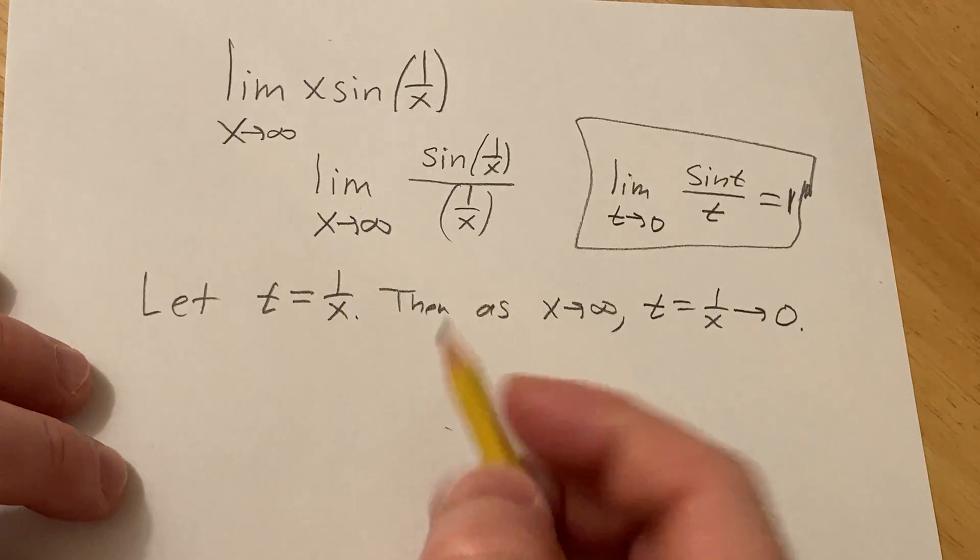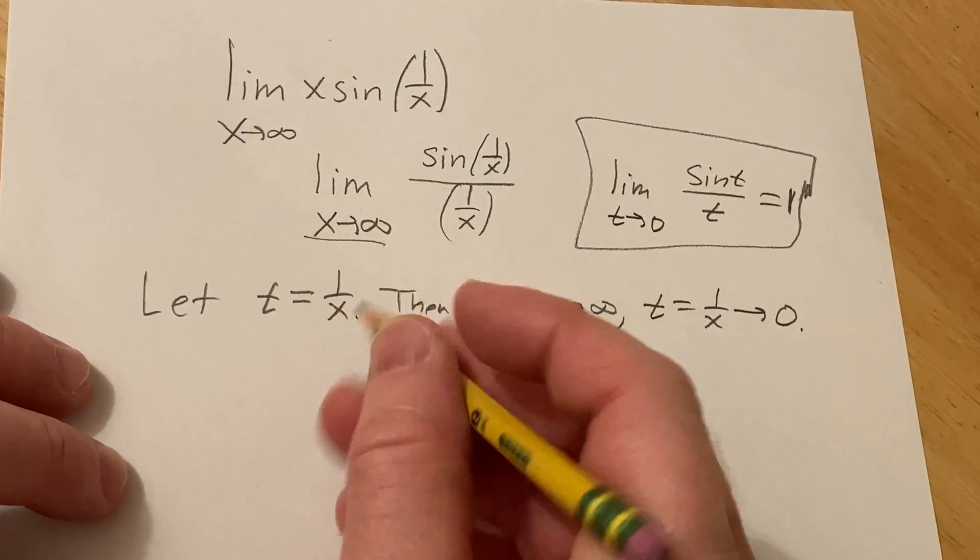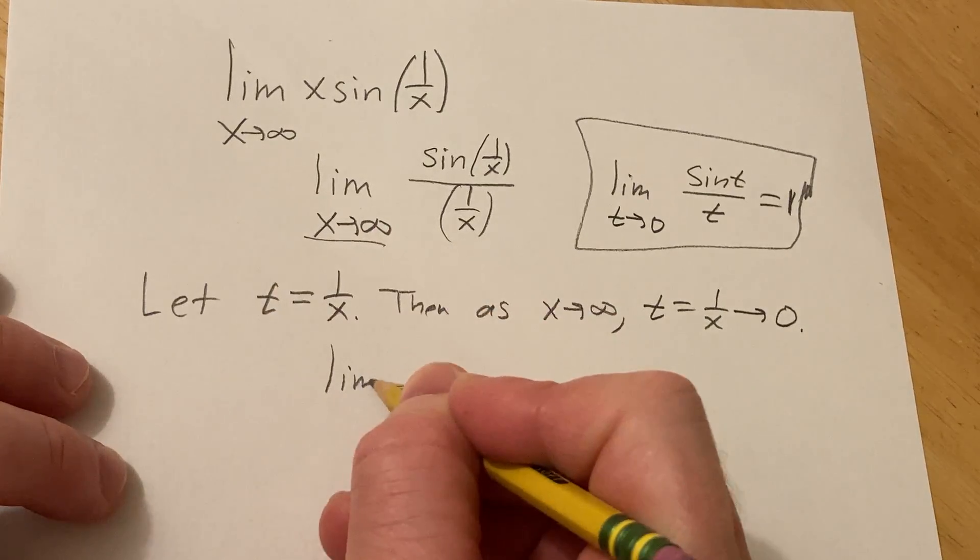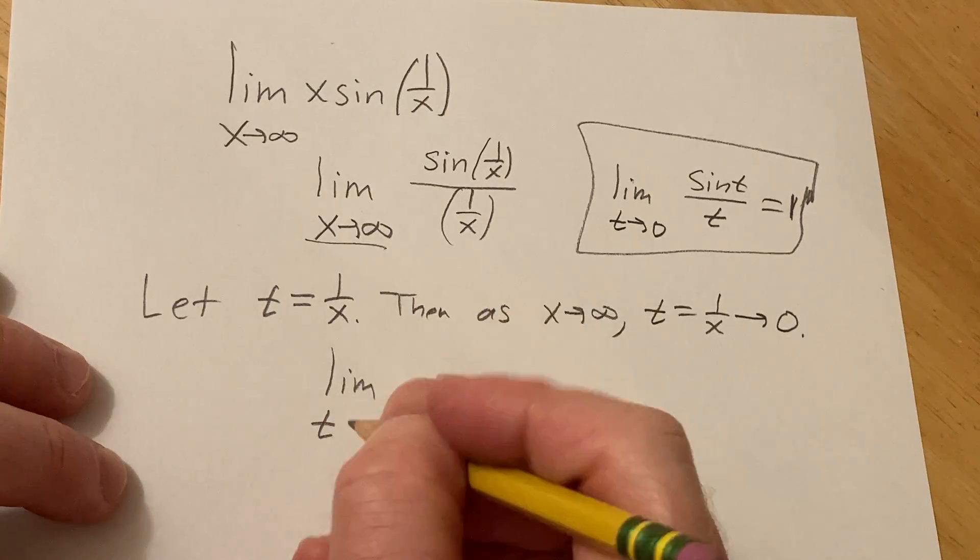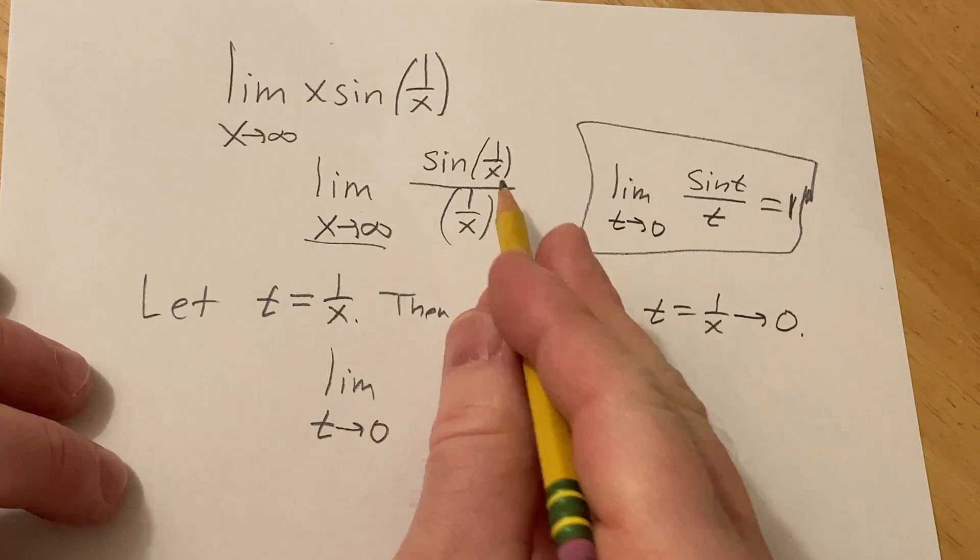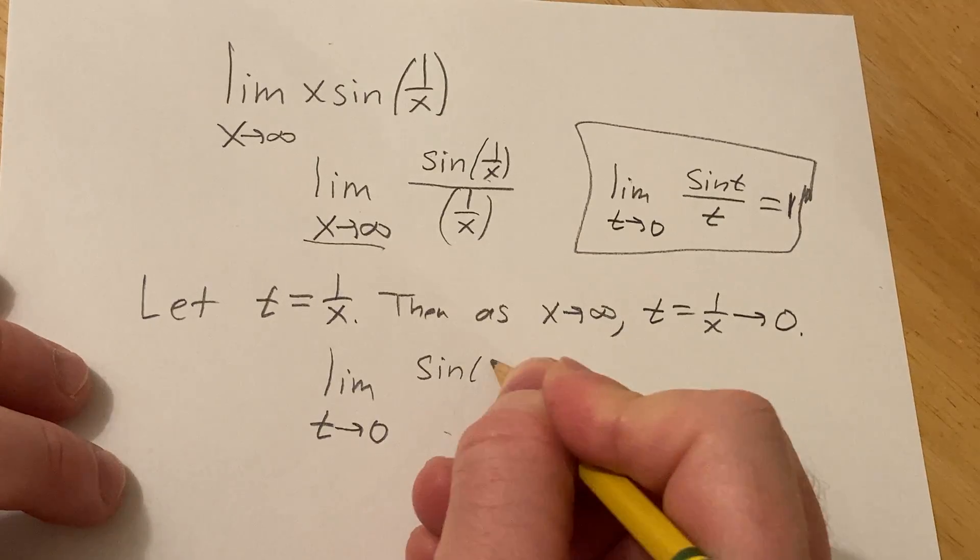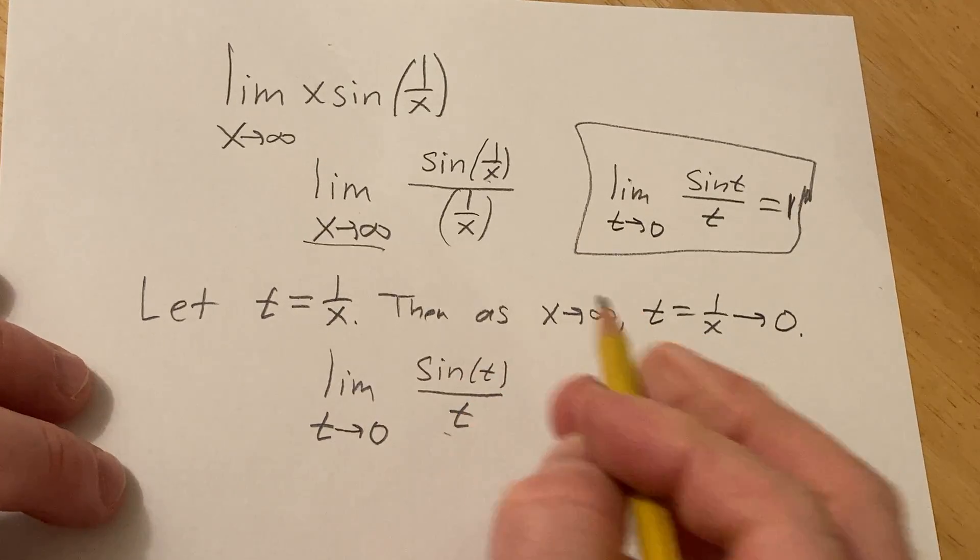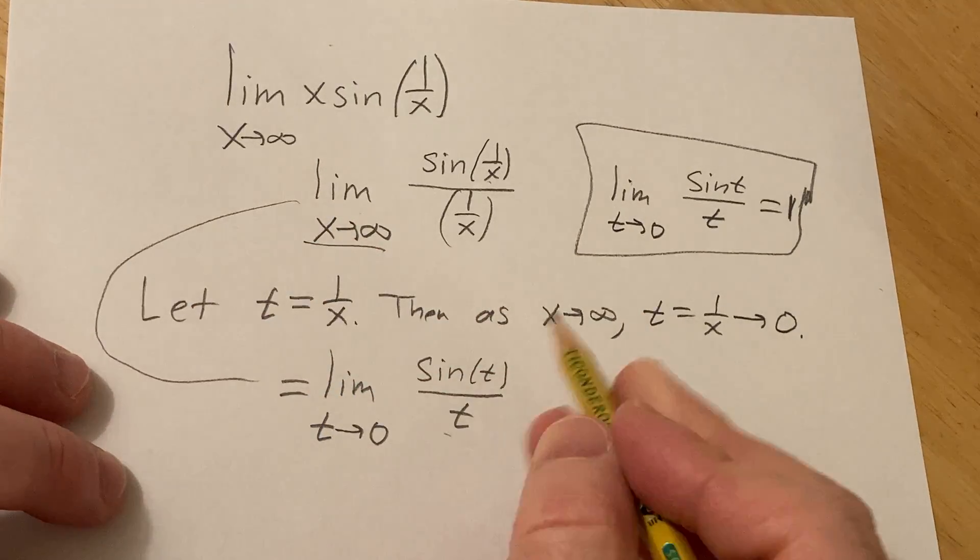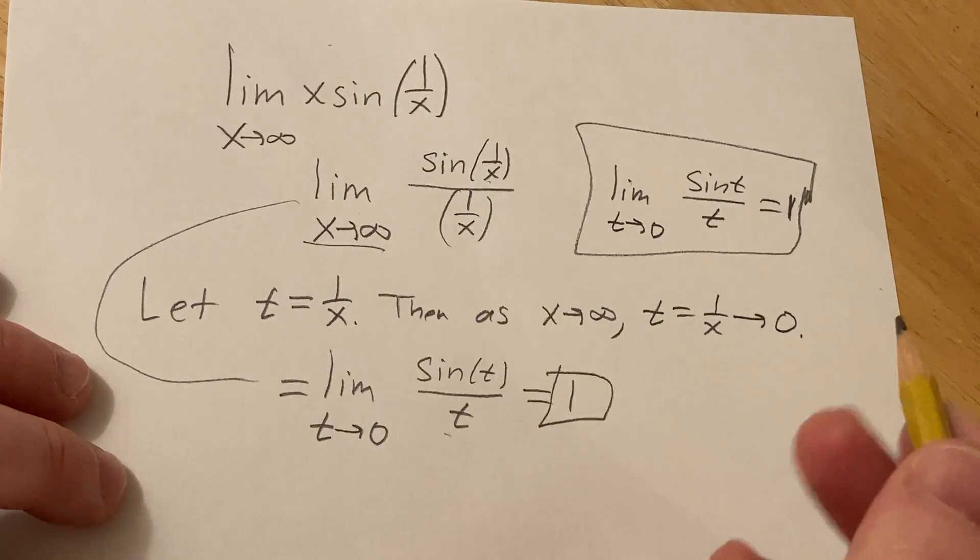So we can make a substitution now in this limit. We can replace x approaching infinity with t approaching 0, and then we can replace each of these 1 over x's with t. So this is actually equal to this, and this is equal to 1. And that completes the solution. So that's it. The answer is 1.